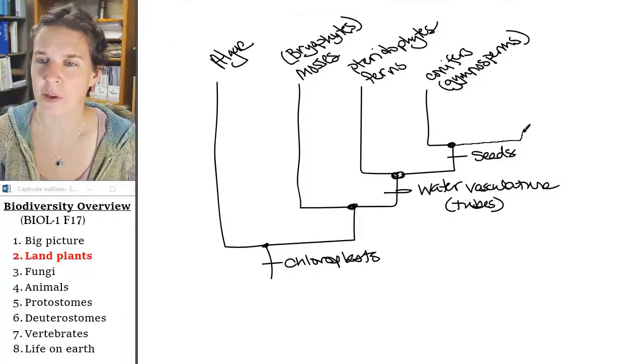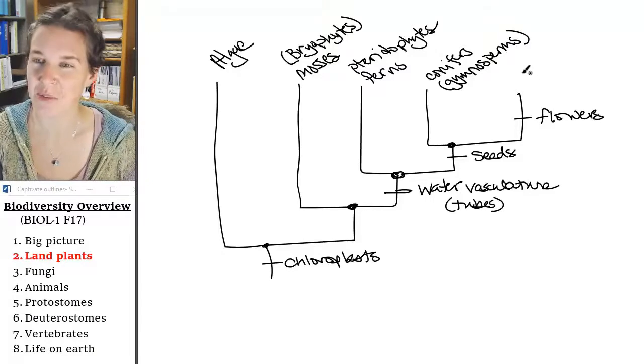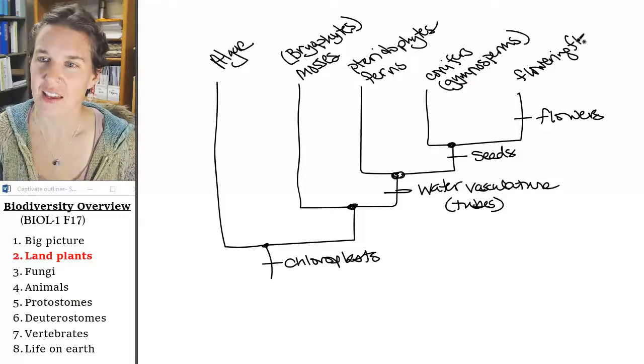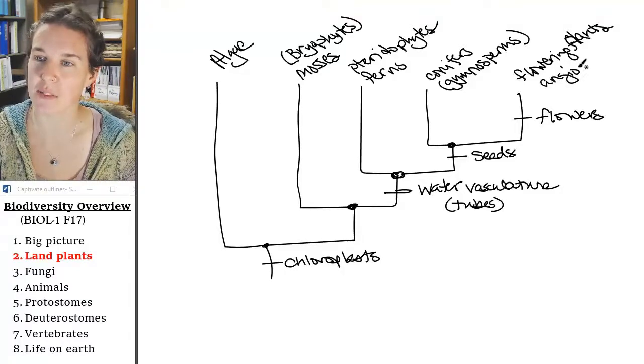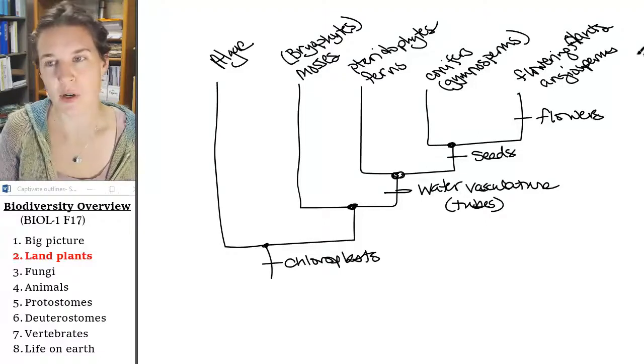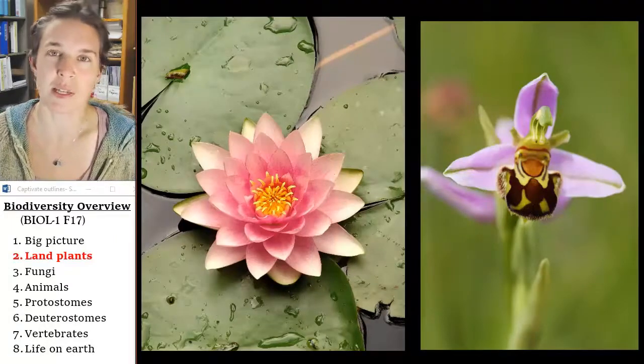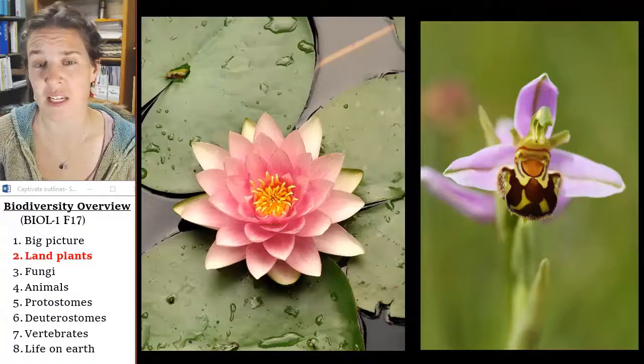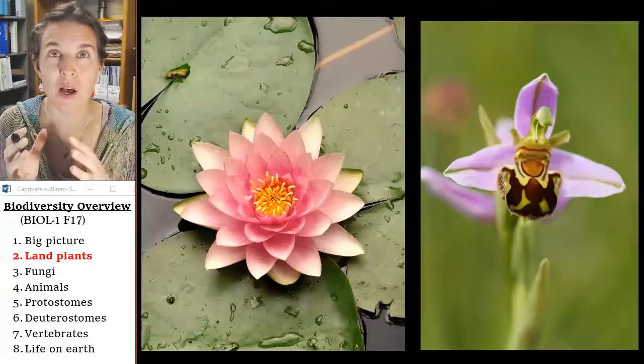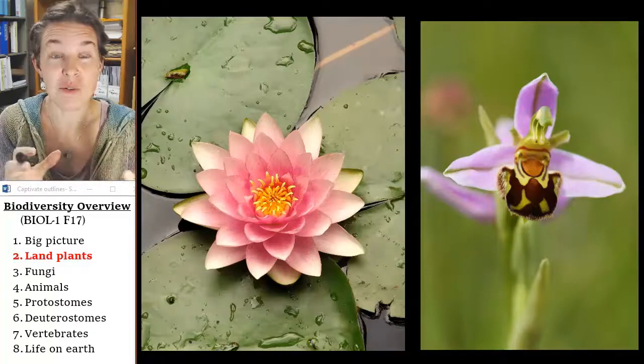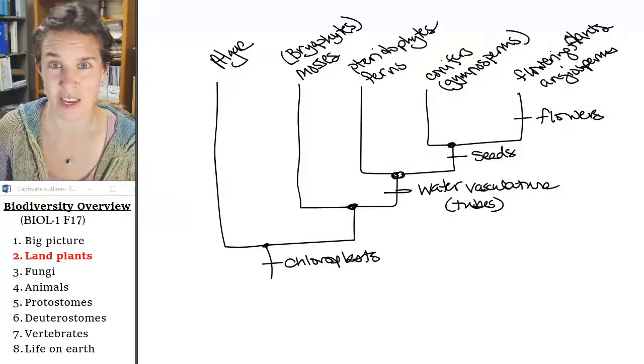And the last group, who are we missing? I'll give you a hint. They have flowers. They're flowering plants. Flowering plants are called angiosperms. Angiosperms, holy diversity. We could truly spend an entire lecture just on angiosperms. They're super interesting. They have all these amazing reproductive adaptations with their flowers, and they've done all this kind of really cool coevolution with animals that pollinate them. So I could spend lots of time on the angiosperms, but I can't because, look, we just did our land plants. You're done.